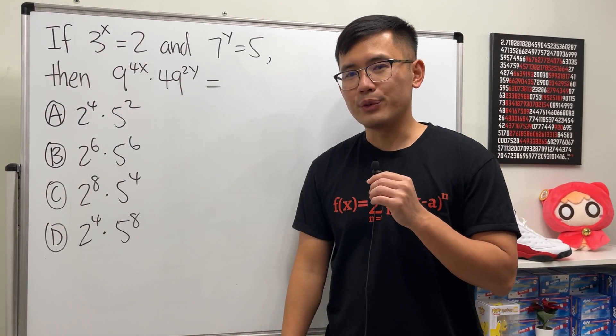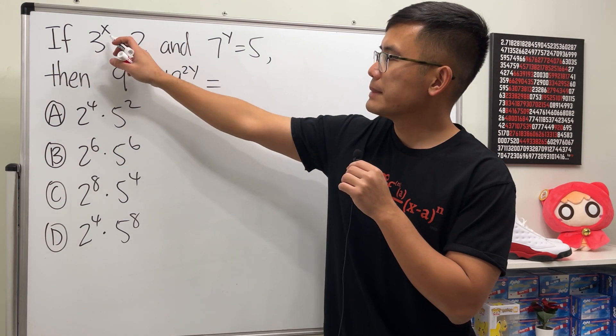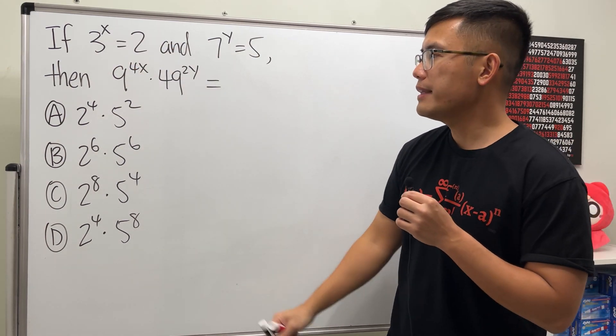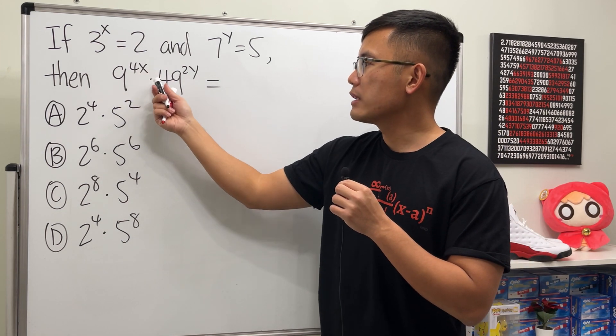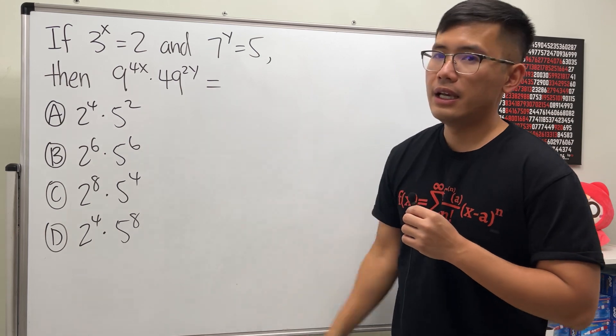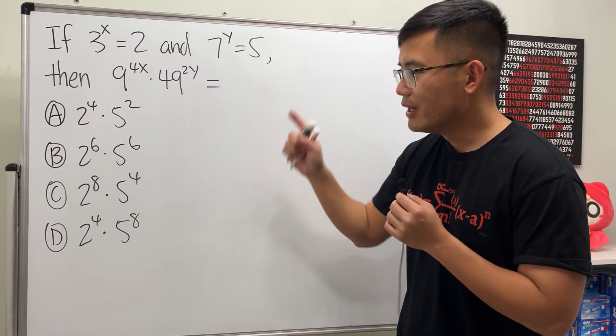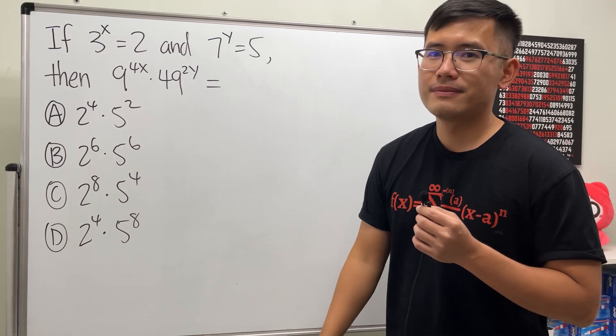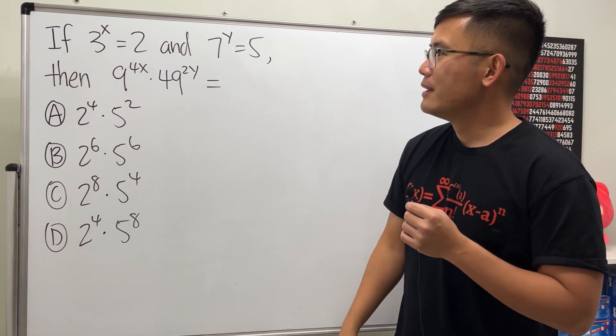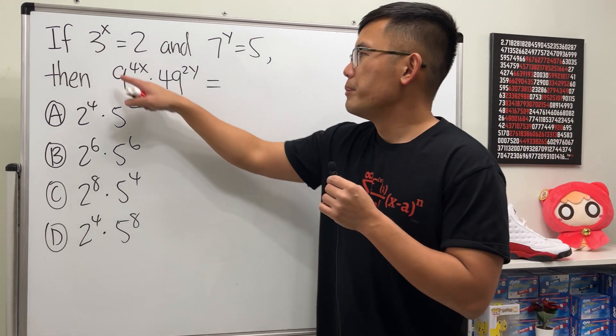Here I have an exponent question for you guys. We are given that 3 to the x power is equal to 2 and 7 to the y power is equal to 5, and we are going to find out 9 to the 4x power times 49 to the 2y power is equal to which of these. You know the deal, please pause the video and try this first.